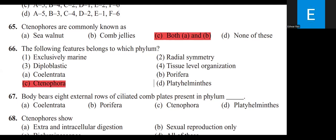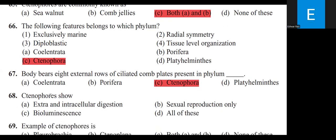Body bearing eight external rows of ciliated comb plates is present in Phylum Ctenophora. Ctenophora shows extracellular and intracellular digestion, sexual reproduction only, and bioluminescence — all of these features are present.